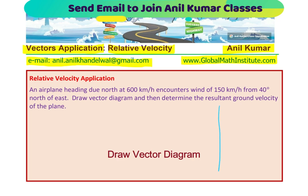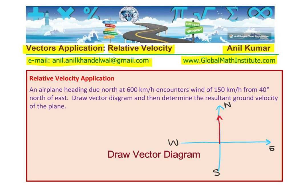Draw your coordinate plane with north along the vertical y-axis and east along the positive x-axis. Then, the other directions are south and west as shown here. Now, when we say airplane heading due north means going in north direction and the velocity or the speed is given to us as 600 kilometers per hour.